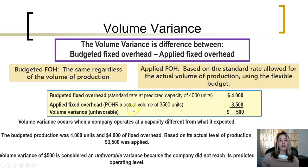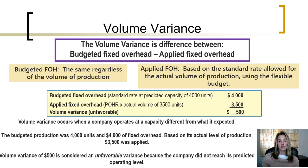the amount of applied fixed overhead was the estimated predetermined overhead rate at the actual volume of 3,500 units, resulting in a volume variance of $500. That volume variance occurred because the company operated at a different capacity from what was expected. The budgeted production was 4,000 units and $4,000 of fixed overhead, but based on its actual level of production, only $3,500 was applied. That volume variance of $500 is considered unfavorable because the company did not reach its predicted operating level.